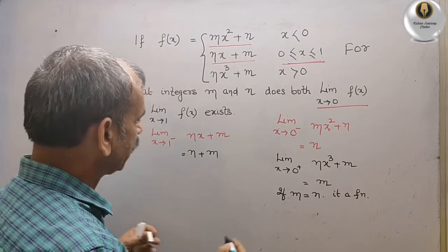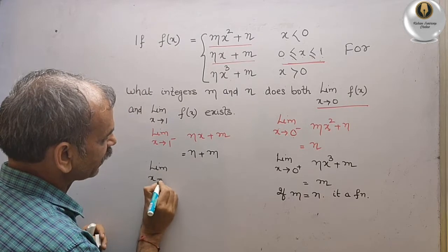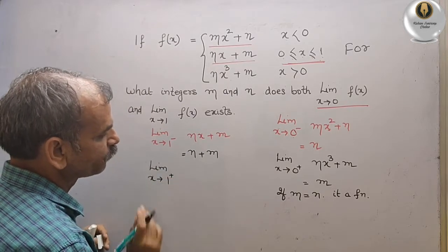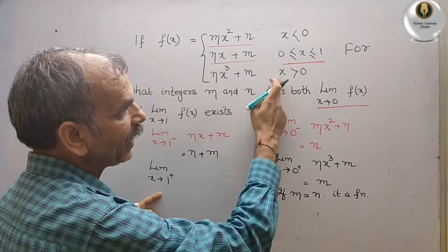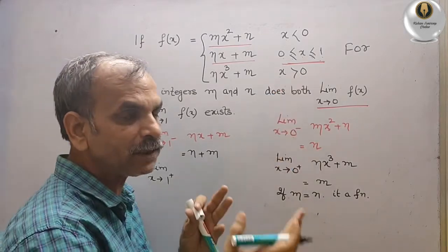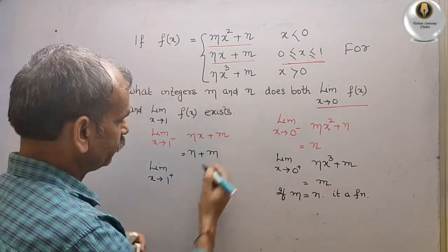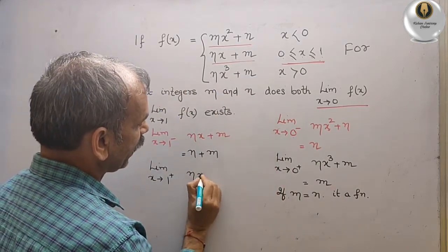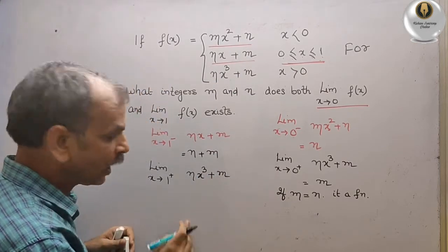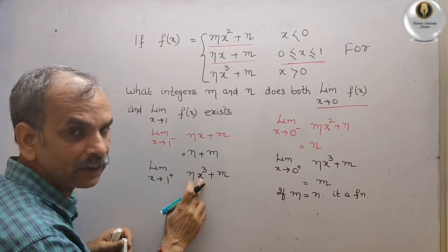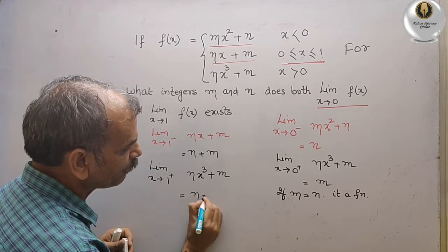Next, we take limit x tends to 1 plus. For 1 plus, we know x is greater than 0, which means it is greater than 1 also, so we take the value nx³ + m. Substitute x = 1 — we will get n + m.